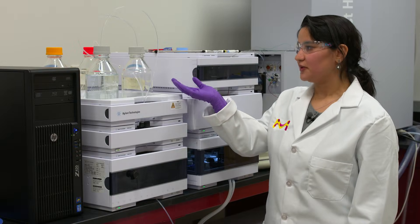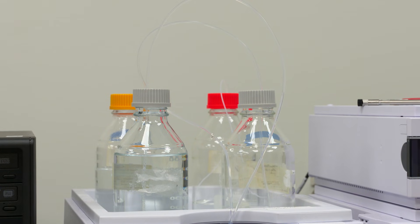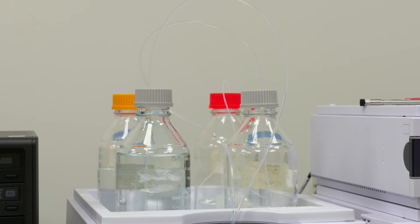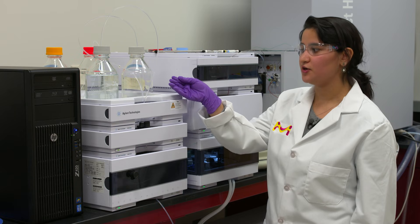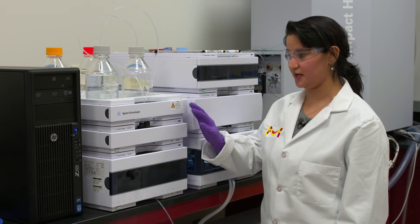Once your mobile phase is filtered, attach it to the appropriate mobile phase tubing line and make sure your tubing lines are flushed into a waste container so it does not carry any carry overs that can cause contamination to your system. The next step is to purge your HPLC.